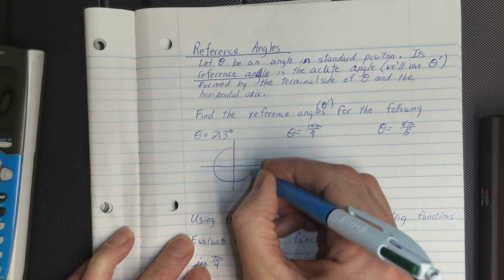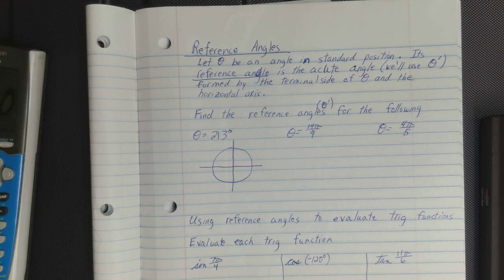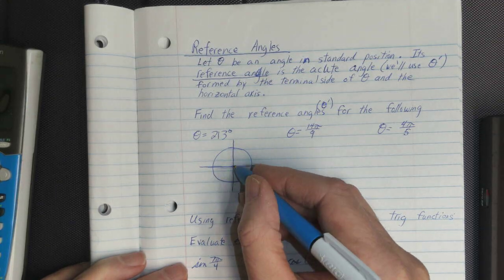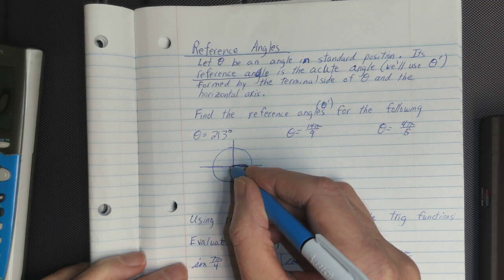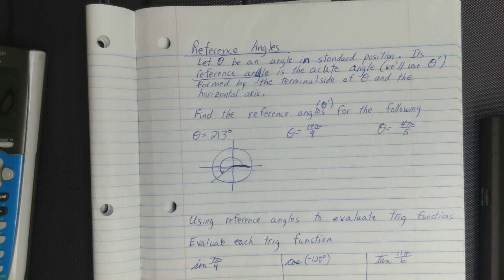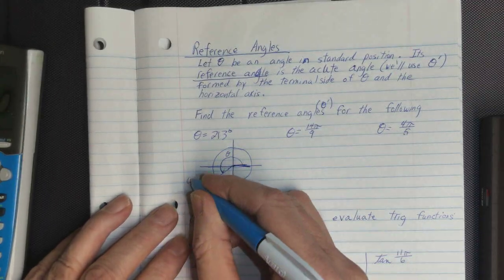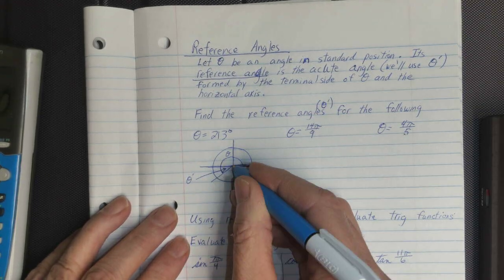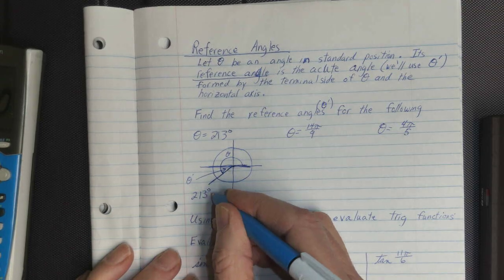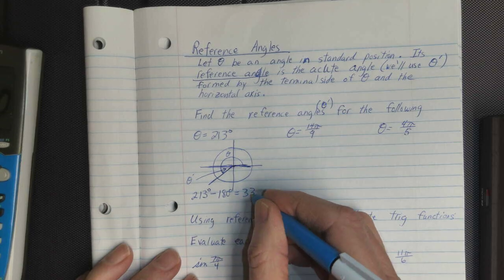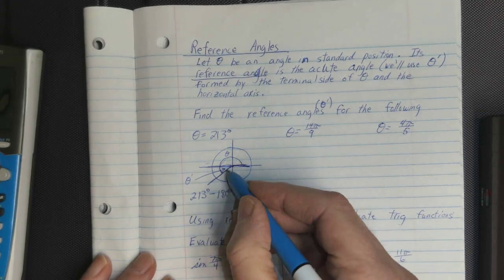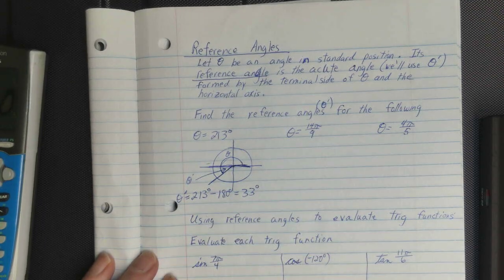For 213 degrees: here's 180 degrees, and we've gone about 33 degrees past that, so this is the 213-degree angle — that's theta. Theta prime is the acute angle between the terminal side and the x-axis. That looks to be 213 degrees minus 180 degrees, which is 33 degrees. So theta prime is 33 degrees.